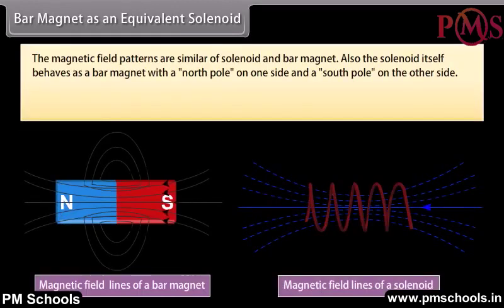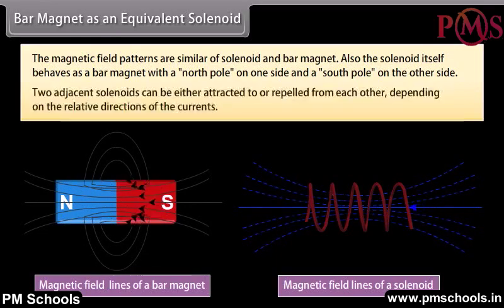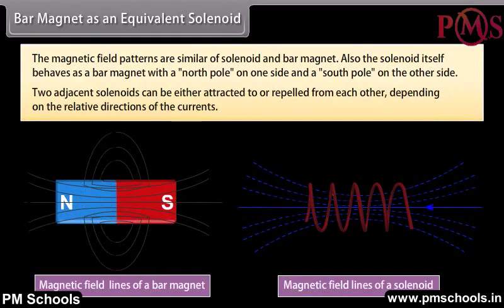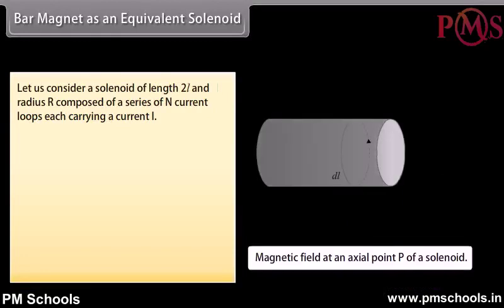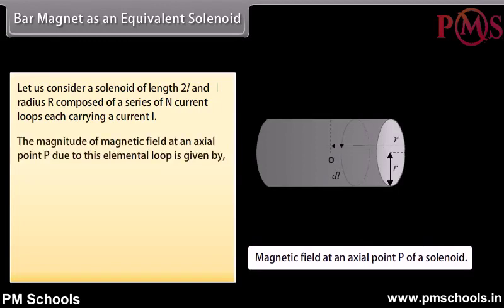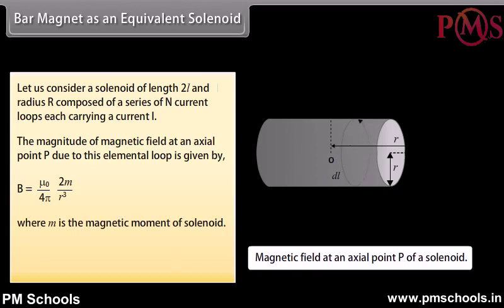Bar magnet as an equivalent solenoid: The magnetic field patterns of a solenoid and bar magnet are similar. The solenoid itself behaves as a bar magnet with a north pole on one side and a south pole on the other. Two adjacent solenoids can either attract or repel each other depending on the relative directions of the currents. For a solenoid of length 2L, radius R, and N current loops each carrying current I, the magnetic field at an axial point P is given by (μ₀/4π)(2M/R³), where M is the magnetic moment of the solenoid. This is exactly the same as that of a bar magnet at a far-off axial point.